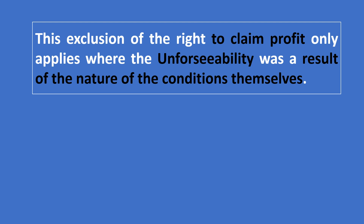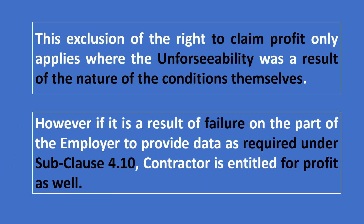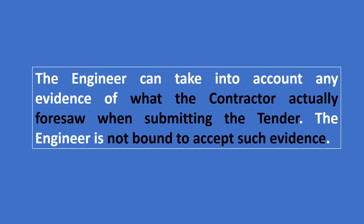The exclusion of the right to claim profit only applies where the unforeseeability was a result of the nature of the conditions themselves. However, if it is the result of failure on the part of the employer to provide data as required under subclause 4.10, the contractor shall be entitled to profit as well. The engineer can take into account any evidence of what the contractor actually foresaw when submitting the tender; however, the engineer is not bound to accept such evidence.